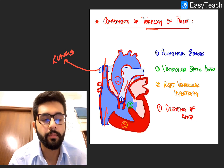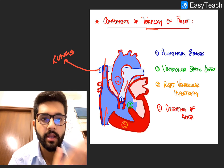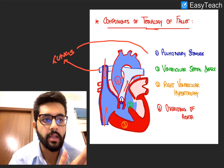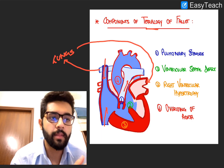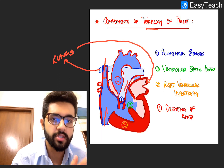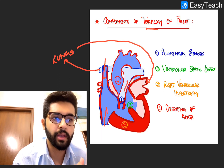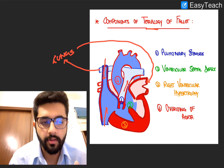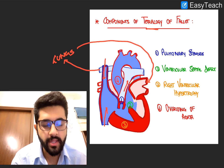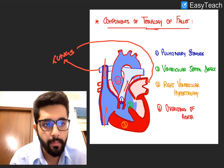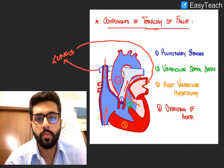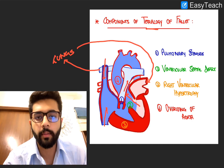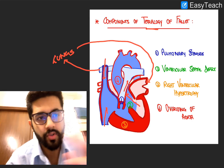Blood from the pulmonary artery goes to the lungs, gets oxygenated, and comes back to the heart via the pulmonary veins. Via the pulmonary veins, oxygenated blood from the lungs enters the left atrium, goes to the left ventricle, and from there it is pumped into systemic circulation via the aorta. That was normal circulation — we all know that.